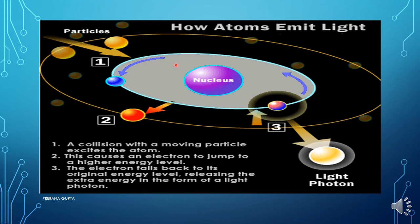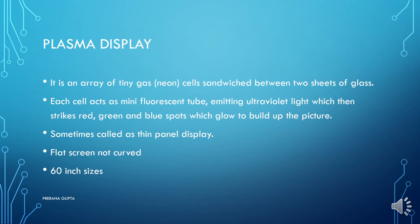A collision with a moving particle excites the atom. This causes an electron to jump to a higher energy level. The electron falls back to its original energy level, releasing the extra energy in the form of a light photon. It will go to a higher level and then come back, but it will release a light photon in the duration, and this light photon will generate the image in our plasma display.